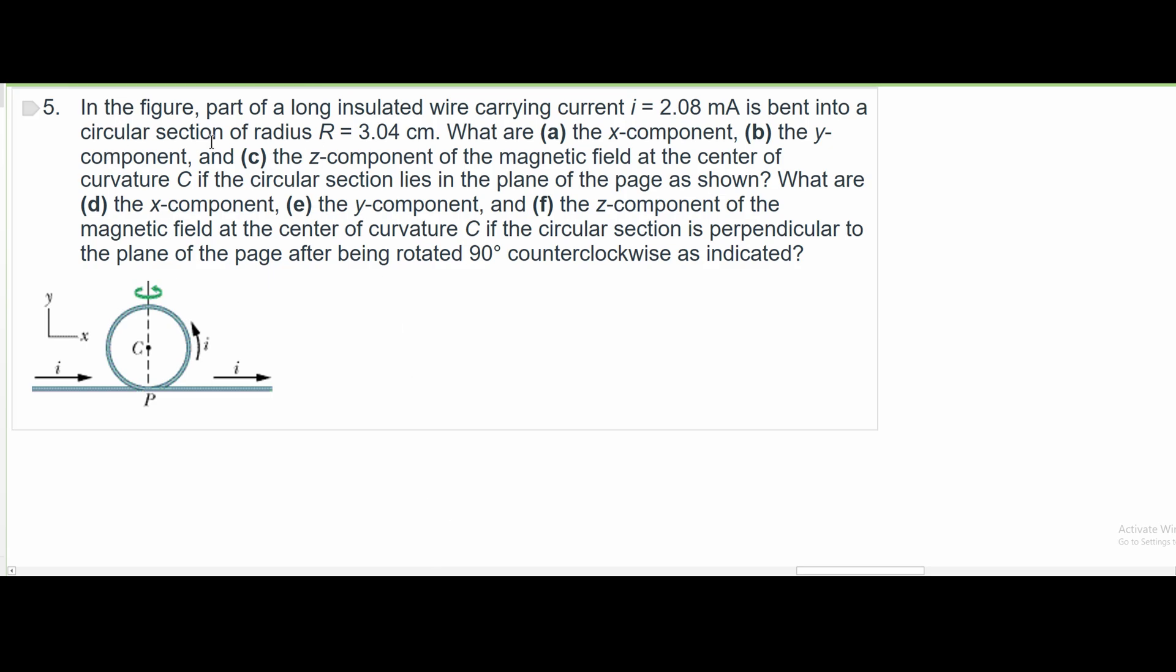For number five, we are told that in the figure, part of a long insulated wire carrying current i equals 2.08 milliamps is bent into a circular section of radius r equals 3.04 centimeters. We are asked what is the x component, y component, and z component of the magnetic field at the center of curvature C if the circular section lies in the plane of the page as shown.